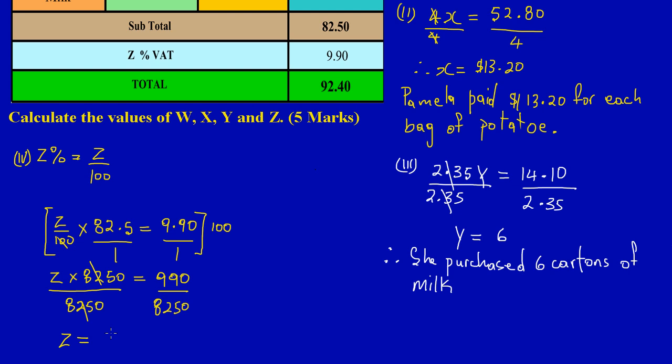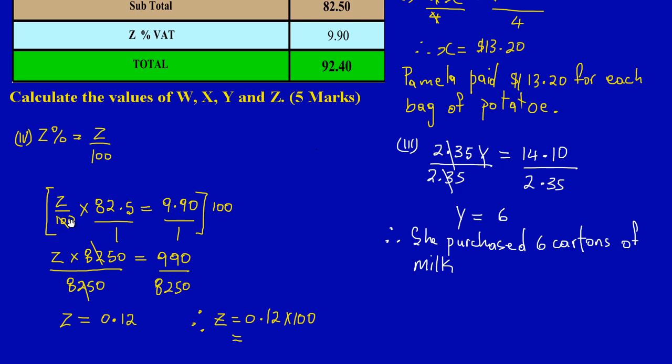However, it is very important to note that I'm working with a percentage. Remember, they asked us to find the percentage. So I can say, therefore, I must say Z is equal to 0.12 times a hundred, because percentage is out of a hundred, which would give us a total of 12%. So I have a total of 12%, and it's that easy.